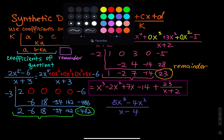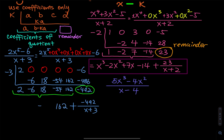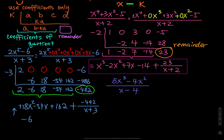The last number is the remainder, and the rest are the coefficients of the quotient. Starting at the remainder and working back: the remainder divided by x plus three, then 162 is the constant, minus 54x for the first degree, plus 18x squared, negative 6x to the third, and 2x to the fourth. So we have 2x to the fourth minus 6x to the third plus 18x squared minus 54x plus 162, plus the remainder over the divisor. That is the final answer.